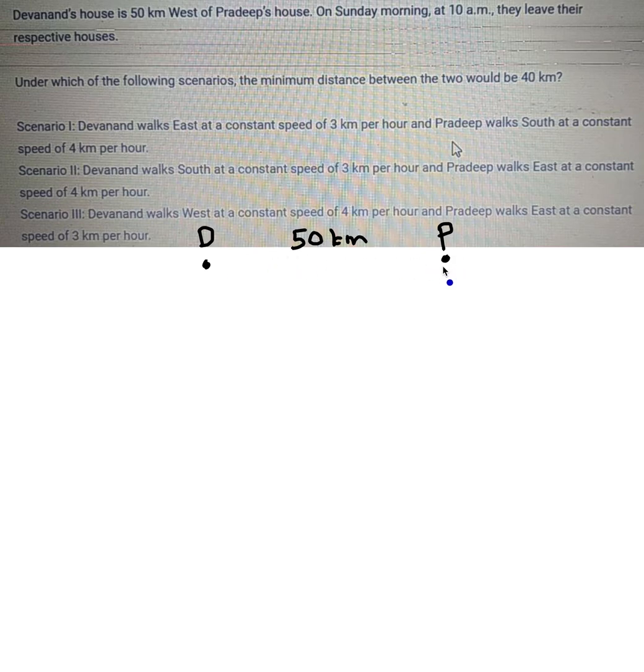Devanand's house is 50 kilometers to the west of Pradeep's house, so Pradeep's house is at the east end and Devanand is west. At 10 a.m. they both leave. Under which of the following situations would the minimum distance between the two be 40 km? The minimum distance is always going to be the straight line distance between them.